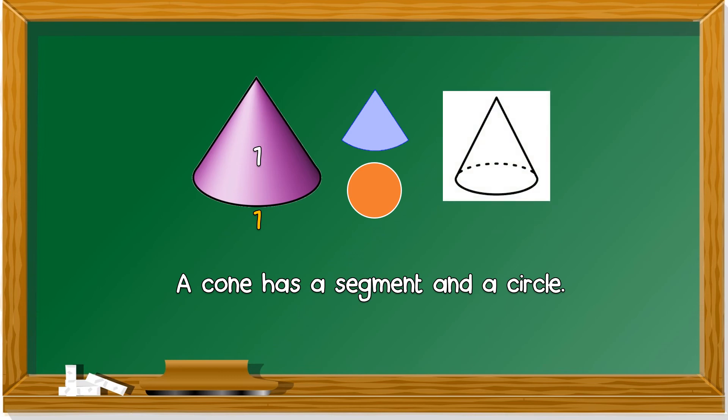A cone has a segment and a circle, not an oval. Because when you look from the side it looks like oval, but if you look down or look from the base, kamu lihat daripada tapaknya, it's a circle.